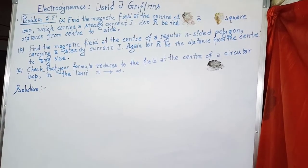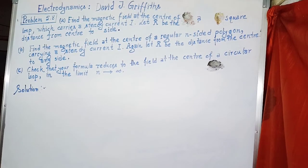Hello everyone. Today I am solving a question from Electrodynamics by David J. Griffiths, problem number 5.8. In this question, we are asked to find the magnetic field at the center of a square loop which carries a steady current I.